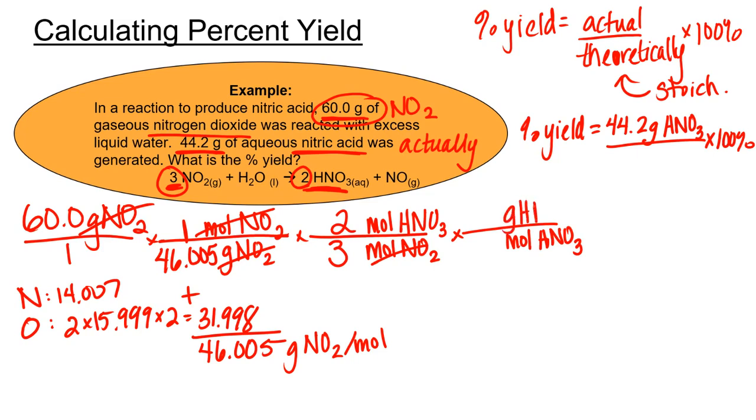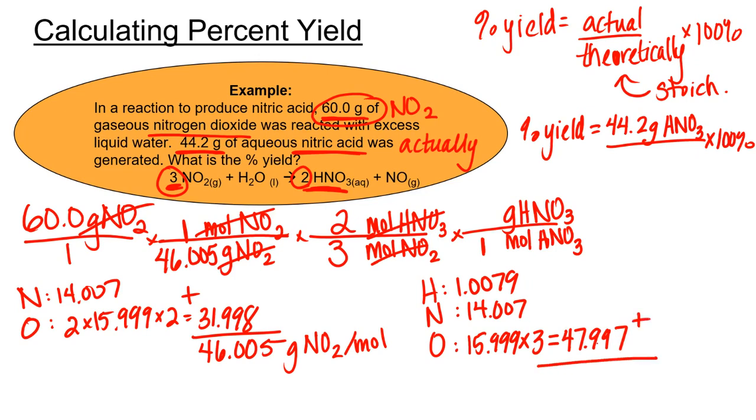We want to get to grams of nitric acid. So in every one mole of nitric acid, we need to know that molar mass. We'll add hydrogen, nitrogen, and three oxygens. When we add these all up, we'll get a molar mass of nitric acid of 63.011 grams per mole.